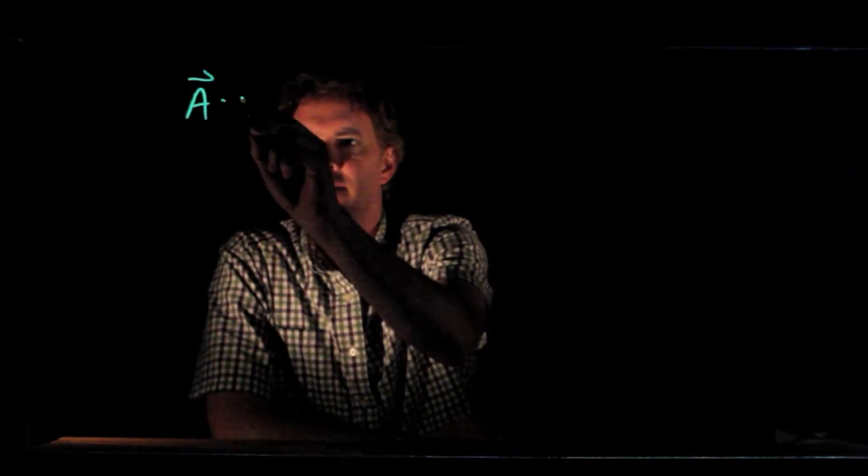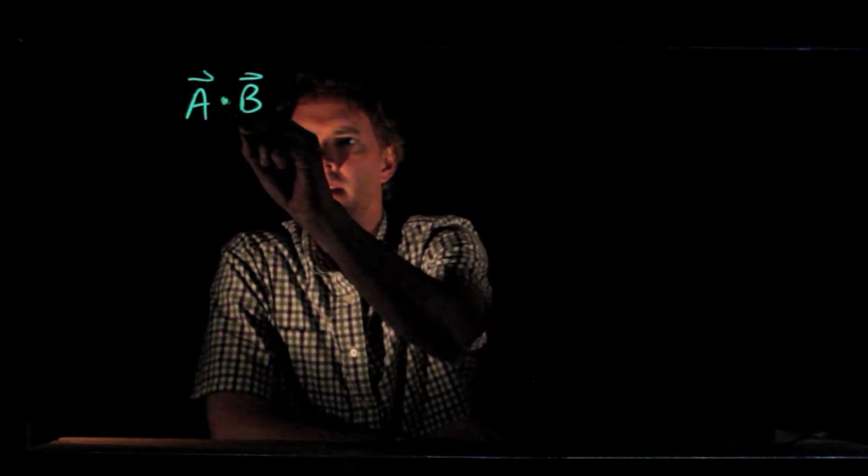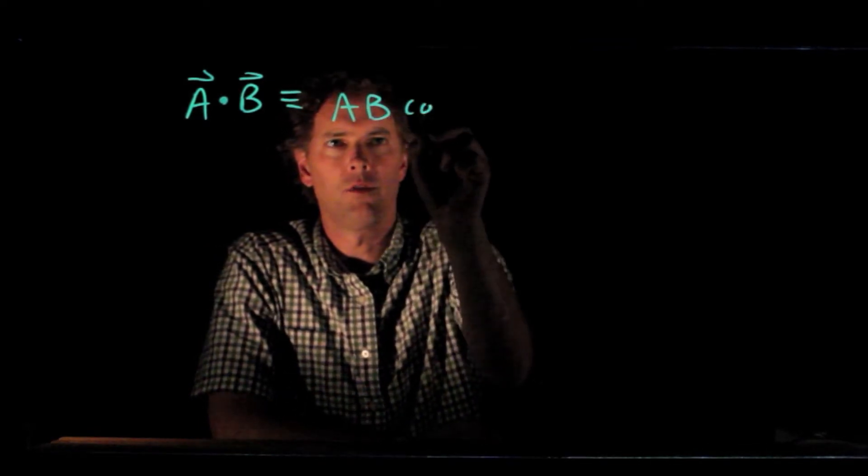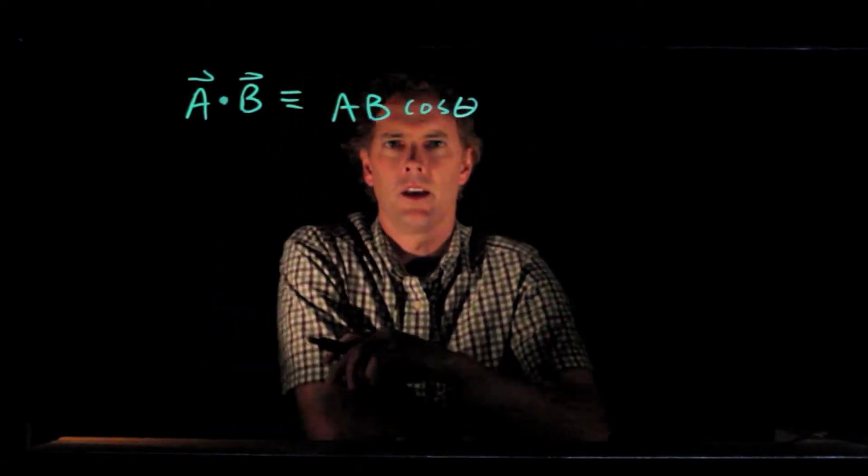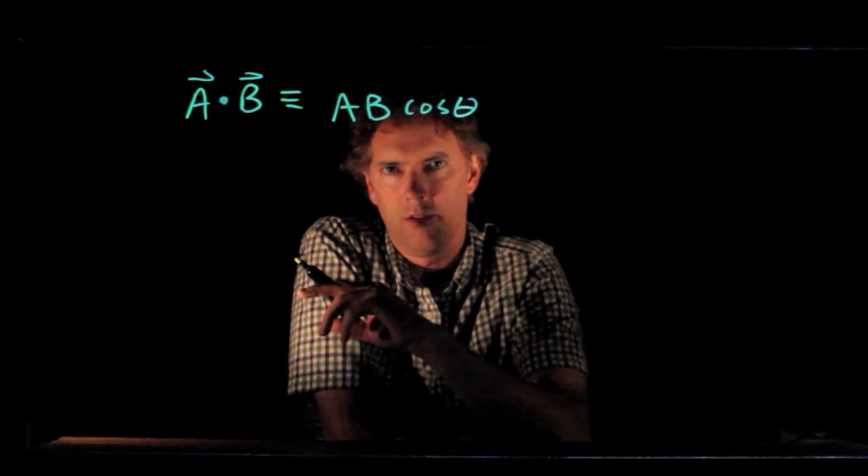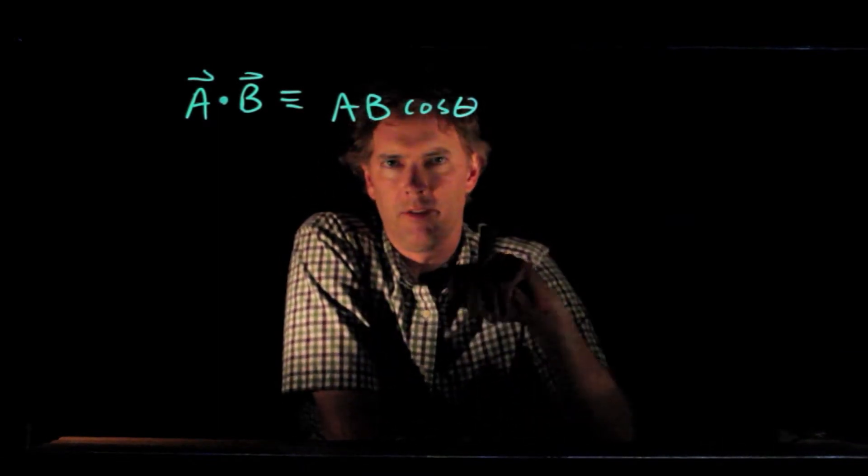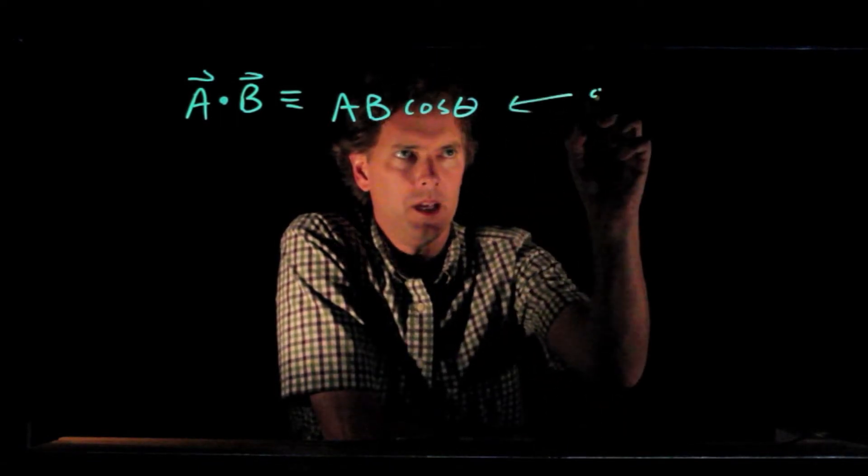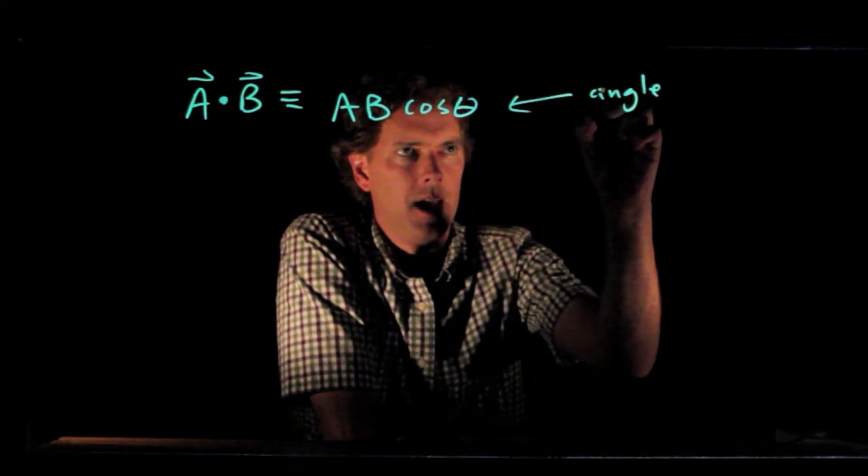Hello, class. Professor Anderson here. Let's talk about the dot product of two vectors. The way it's defined, A dot B is A B cosine of theta. A is of course the magnitude of vector A, B is the magnitude of vector B, and theta is the angle between A and B.